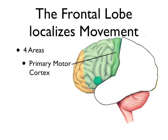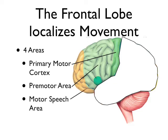The primary motor cortex has three other areas alongside it: the premotor area, which is the largest portion in light green; a motor speech area within the boundaries of that premotor area; and way out in front, a gold-colored area known as the prefrontal area. These are the four major areas within the frontal lobe.